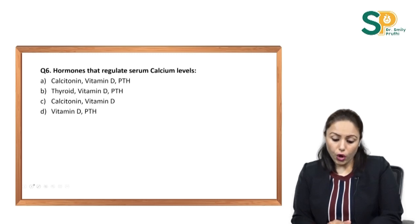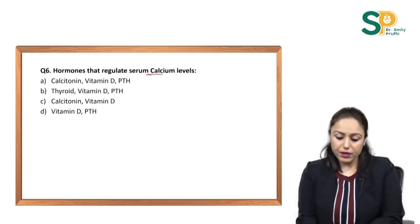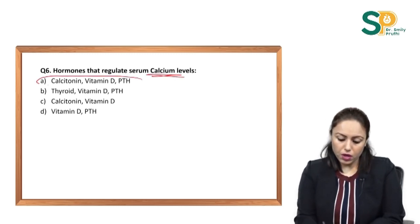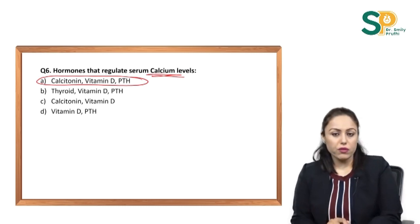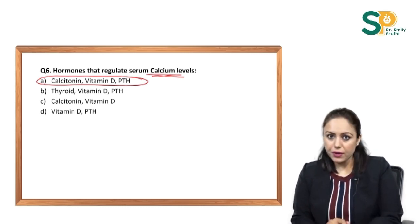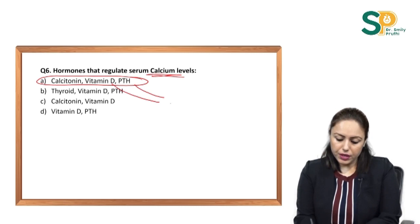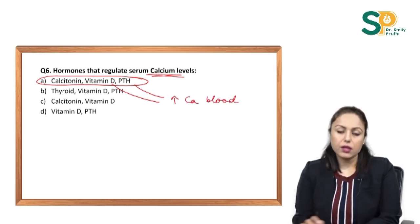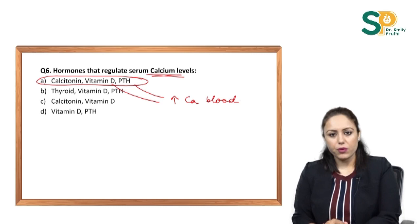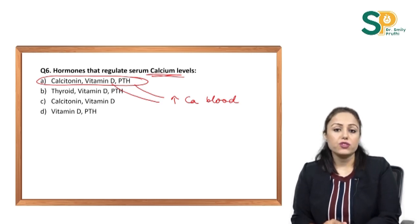Next question: which hormones regulate serum calcium levels? Calcitonin decreases calcium in blood, while vitamin D and PTH increase calcium in blood. These three hormones regulate calcium levels in the body.